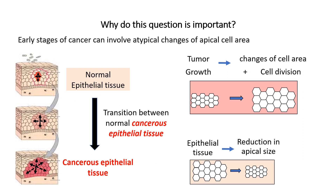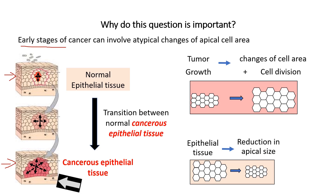This question is important because in the early stages of cancer, there are a lot of atypical changes in the apical cell area, and we want to study those. Here we have a normal epithelium, and at the end we have an example of a cancerous epithelium. In the early stages of cancer, there is a transition between a normal and a cancerous epithelium.